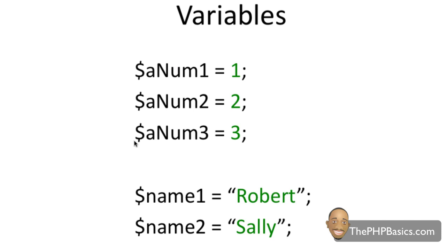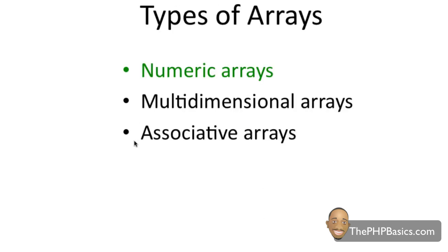An array is basically a special variable which we can store multiple values in. We have different types of arrays: we have numerical arrays, we have multi-dimensional arrays, and we have associative arrays. In this video we'll only be covering numerical arrays.